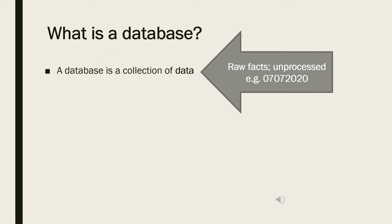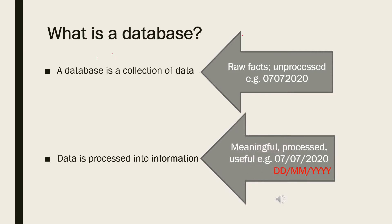Data in a database is processed into information. This data, usually stored as tables, forms the basis of information. Therefore, information is meaningful or processed data that is useful in some way. For example, if we take the numbers 07072020 and apply meaning by identifying them as DD/MM/YYYY, the data becomes information regarding a date. Data and information in a database can be stored in various forms: text, audio, images, video, etc.